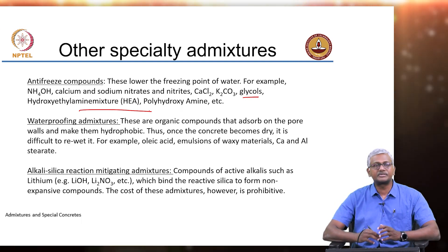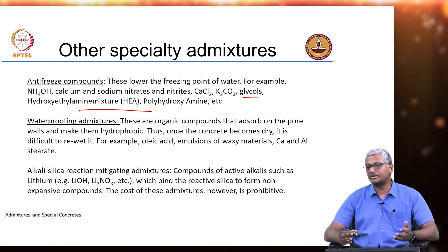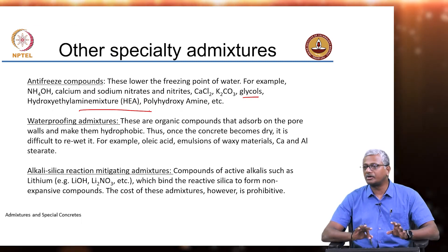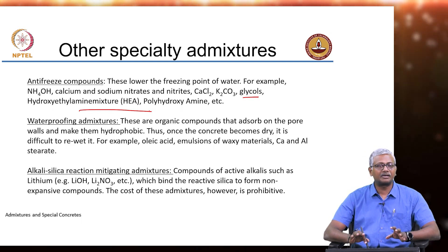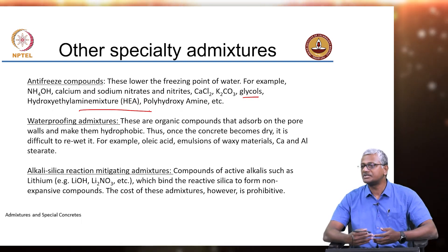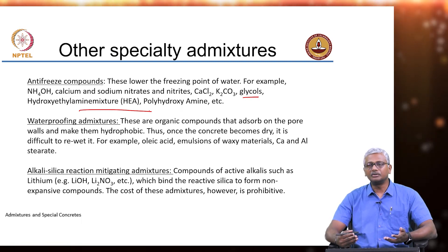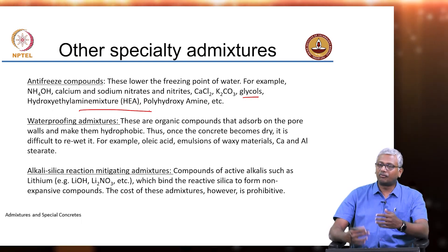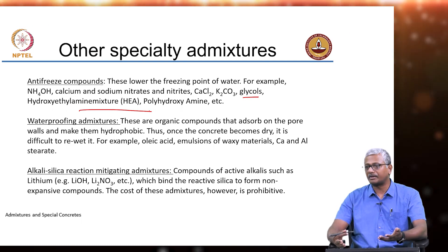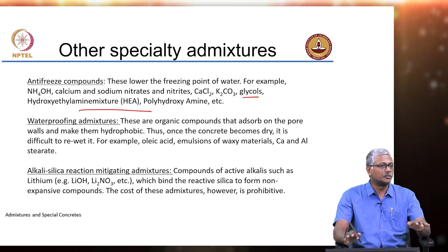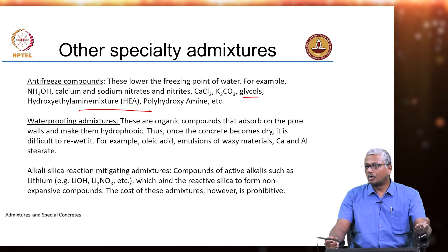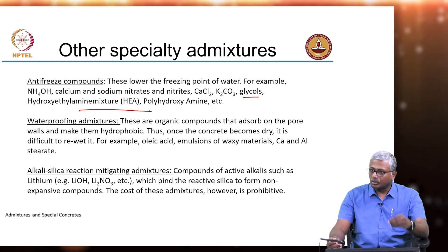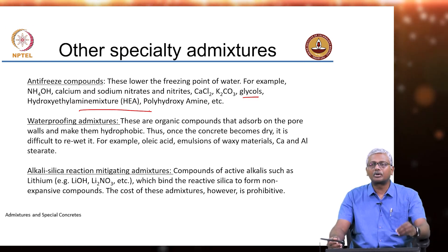Waterproofing admixtures are a whole range of chemicals available in the industry. The construction chemical manufacturers who sell waterproofing agents make you believe that whatever be the quality of the concrete, put this material and it will become magic — that is all wrong. Good engineering is the top solution to any water-related problems. First, you need to engineer the material or engineer the structure properly — if water is there, you want to cause it to flow out of the building. Second, concrete quality has to be good. The use of waterproofing chemicals can only make good concrete better; it cannot make poor concrete into good concrete.